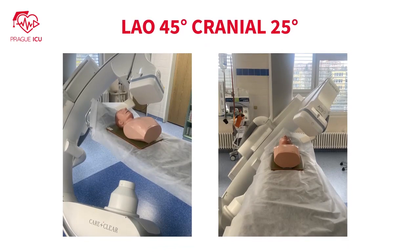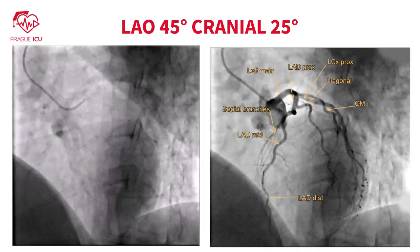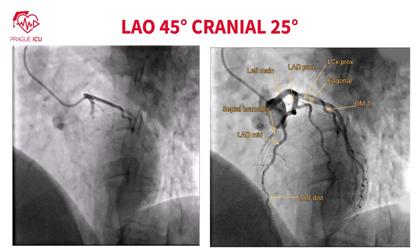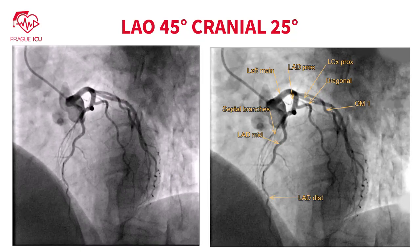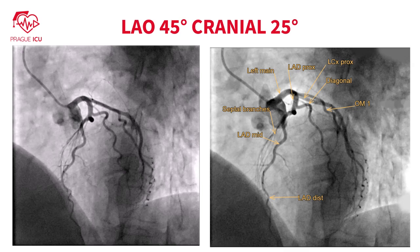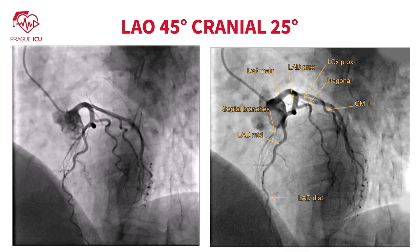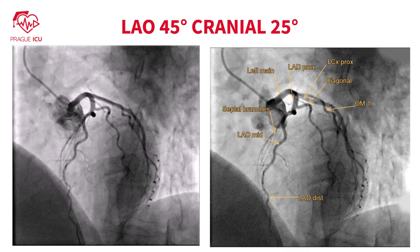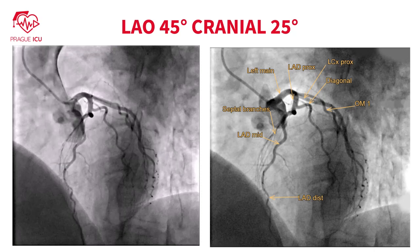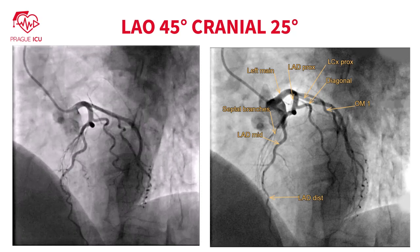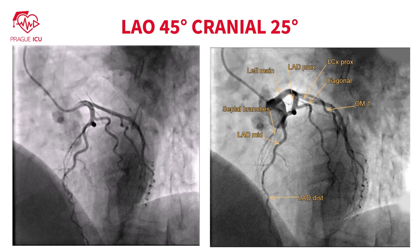Left anterior oblique 45 degrees cranial 25 degrees view is best for visualizing the ostium of the left main and then the mid and distal LAD with origins of diagonal branches, which are on the same side as the obtuse marginal branches. Septal perforators are seen to the opposite side.